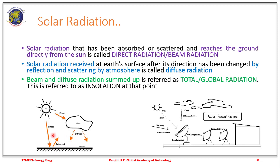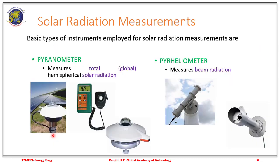The direct radiation, also known as beam radiation, and diffuse radiation — and the sum of direct or beam plus diffuse — is known as total or global radiation. There are few instruments available for measurement of solar radiation received on earth. The first is a pyranometer which measures total or global solar radiation. We use a pyroheliometer which measures the beam radiation.